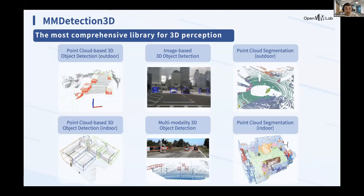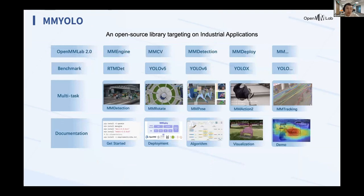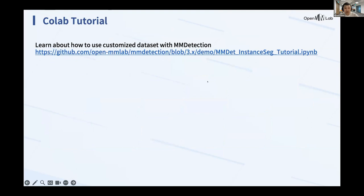MM Detection 3D is the most comprehensive library for 3D perception. It supports many tasks including point cloud-based 3D object detection, image-based 3D object detection, indoor and outdoor datasets, multi-modality 3D object detection, and point cloud segmentation. MM YOLO supports YOLOv5, v6, X, v8, and RTMDet, targeting industrial real-time models. In the future it will also support rotated object detection and pose estimation, with comprehensive documentation.